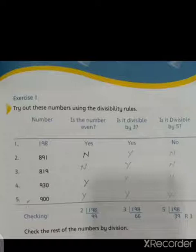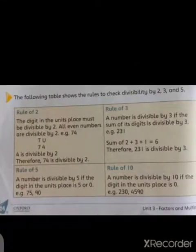For class, you will do the remaining parts by yourself. Now move to the next: Is it divisible by 5? You will check whether this number is divided by 5 or not. For this, we have to read the rule of 5. The rule of 5 is: a number is divisible by 5 if the digit in the unit place is 5 or 0. If we have 5 or 0 in the unit place, it means it is divisible by 5.